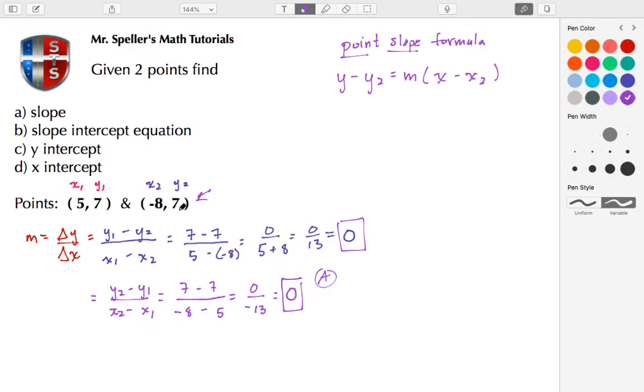in this case Y₂ is equal to M times X minus X₂. And again, I'm using X₂ and Y₂ because I chose this point. You'll probably more likely see it written as Y₁ and X₁, but we're using this point. So let's rewrite using the substitution: Y minus Y₂, which is 7, is equal to